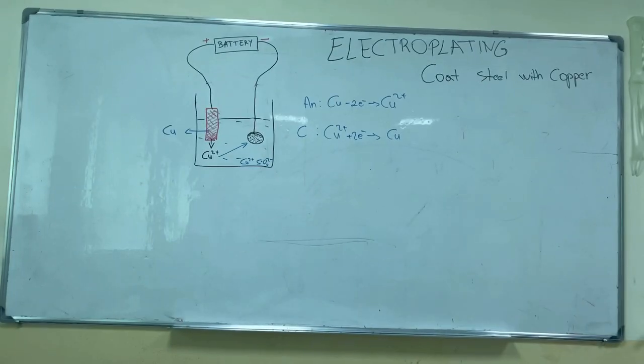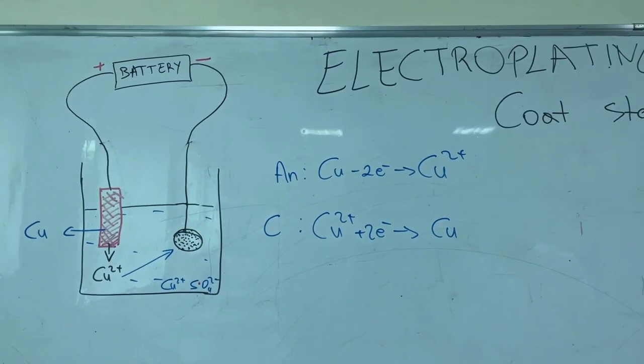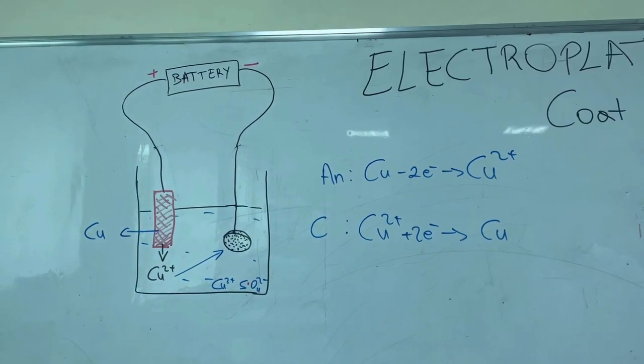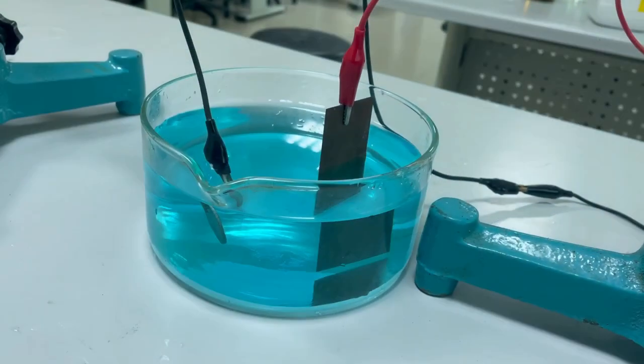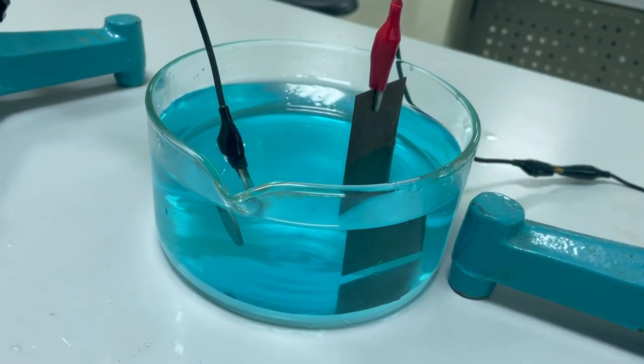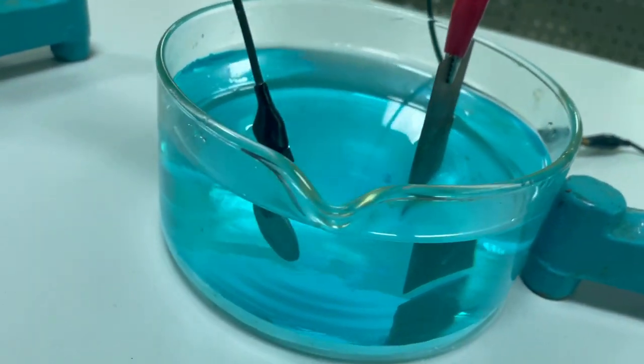Now we are going to coat steel with copper by electroplating process. For this experiment we need a copper sulfate solution, a copper electrode, and a steel point electrode.